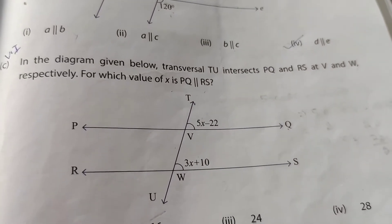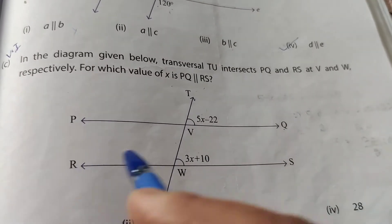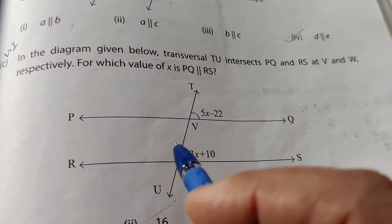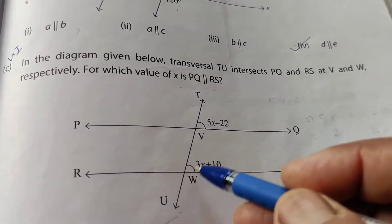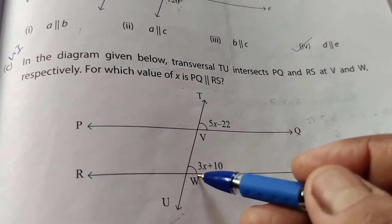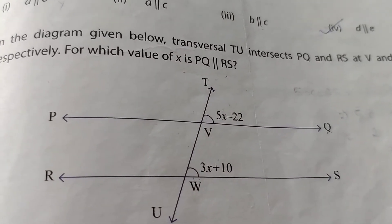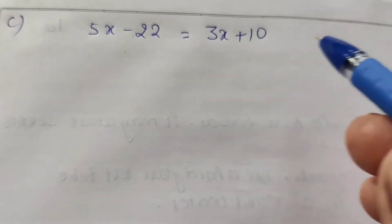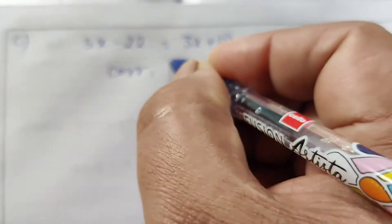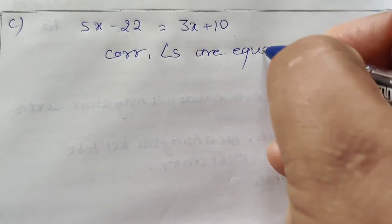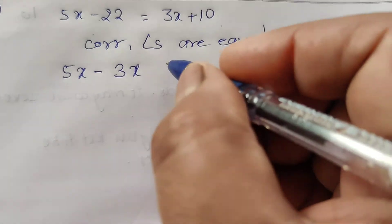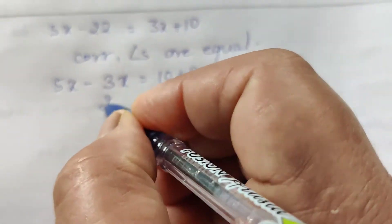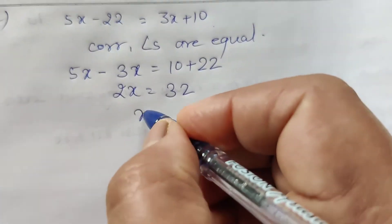In the diagram, transversal TU intersects PQ and RS at V and W respectively. For which value of X is PQ parallel to RS? Angles V and W are corresponding angles. Since corresponding angles of parallel lines are equal: 5X − 22 = 3X + 10. Solving: 5X − 3X = 10 + 22, so 2X = 32, therefore X = 16.